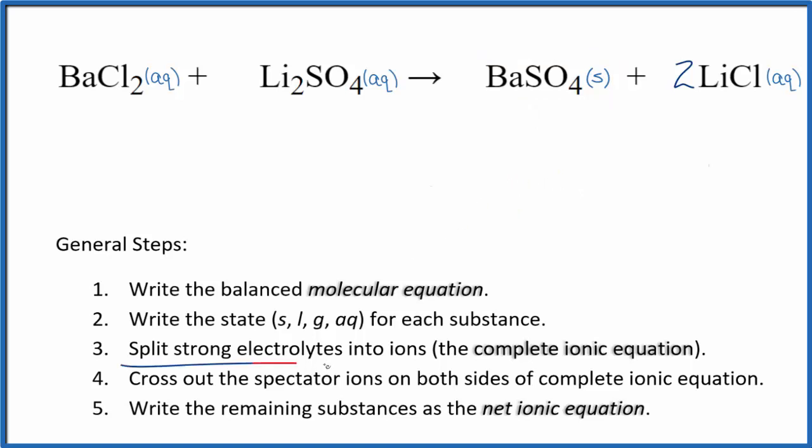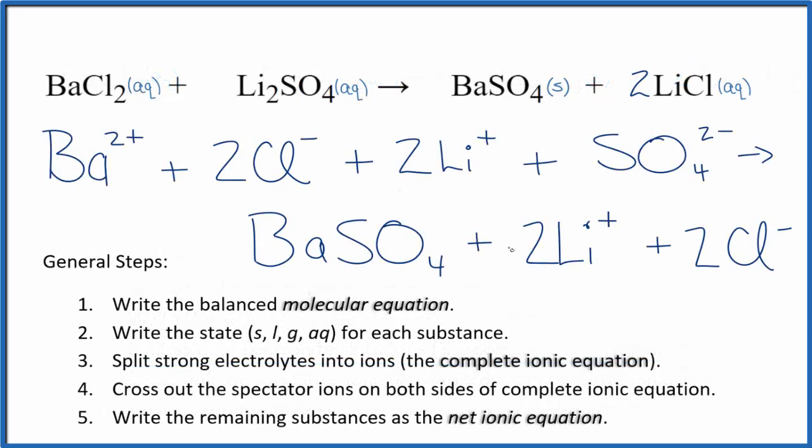Now we can split the strong electrolytes into ions for the complete ionic equation. And that looks like this. So this is the complete ionic equation for BaCl2 plus Li2SO4. Note we didn't split apart the solid barium sulfate. That stays together when we write the complete ionic equation.